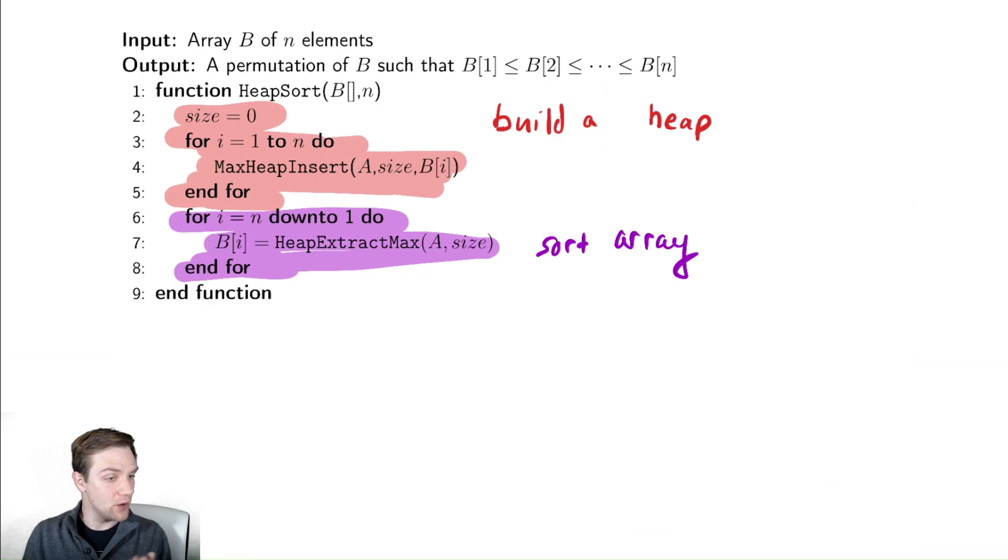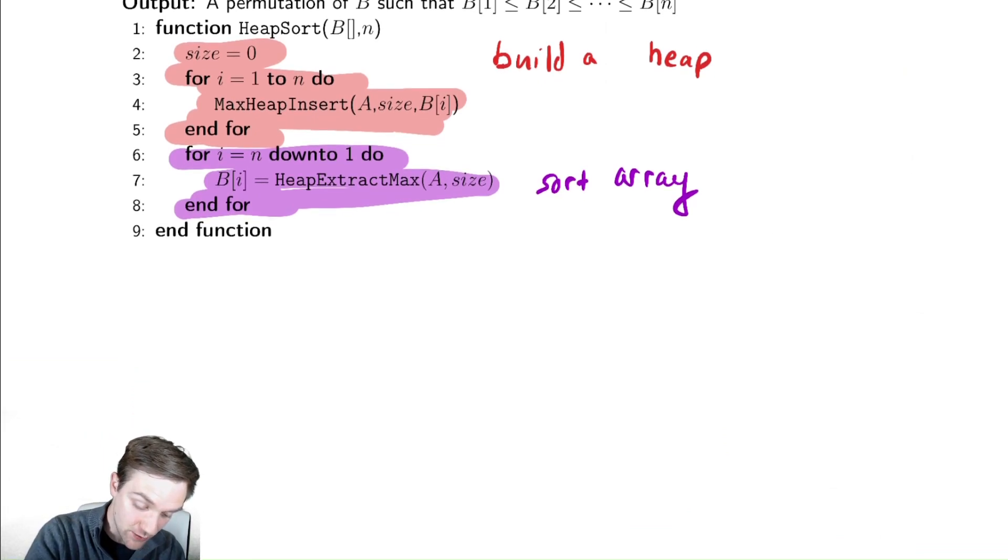How can we analyze this? Well, we know some things about these functions. Let's try and write this down in a very generic way first. T of n, the runtime of the sorting algorithm.